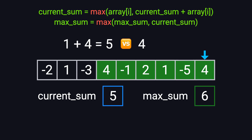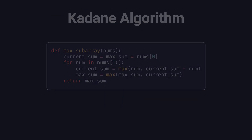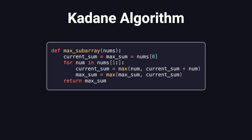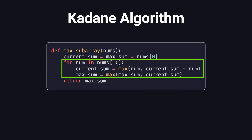We've now gone through the whole array. The biggest sum we ever saw was 6, so that's our final answer. Here's how Kadane's algorithm looks in Python. It's short, clean, and very efficient. At each step, we're just making a local decision: keep going, or reset. We only use a single loop, so the time complexity is O(n). And we only use two variables, so the space complexity is O(1).